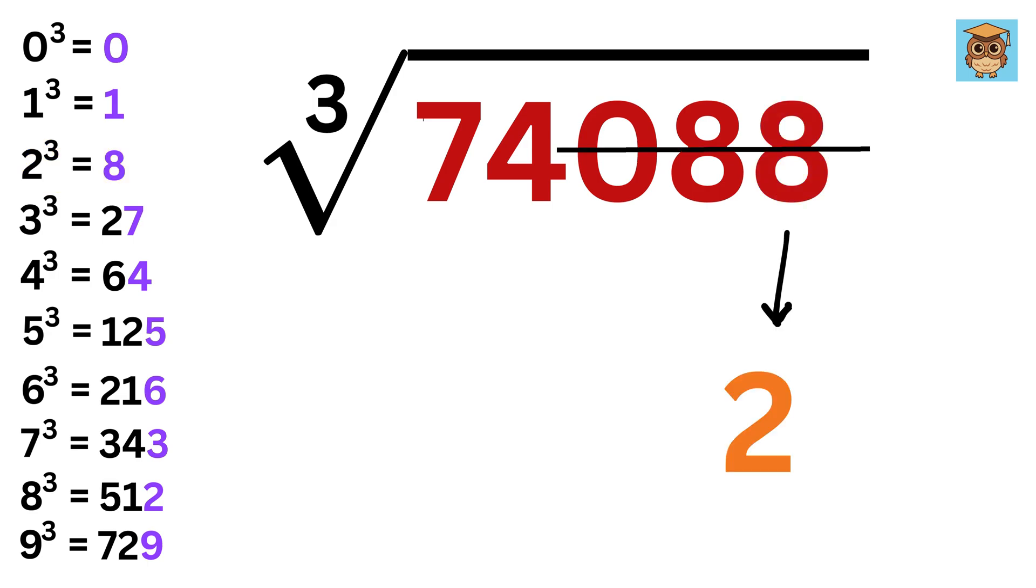Now the next step is to cross out the last 3 digits like this. Finally, we want a cube which is just less than or equal to 74. Look here. It's 64, which is 4 cube. So we write 4 here, and we are done. Our answer is 42, or 42 cube equals this number.